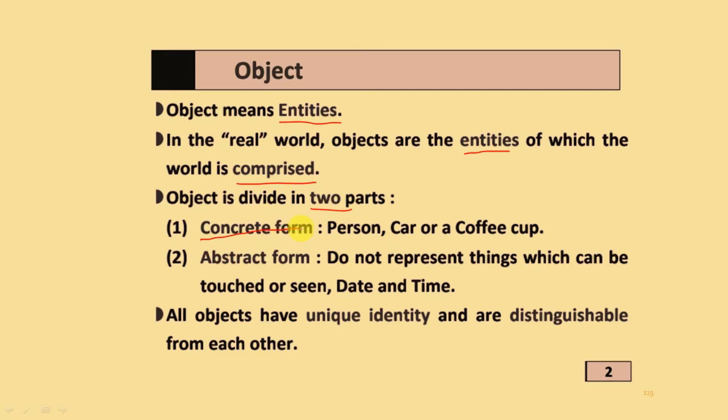The first one is concrete form. The second one is abstract form. Concrete form means person, car, or coffee cup and different other examples.